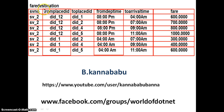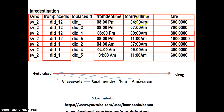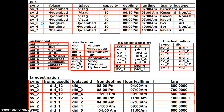The next important table is the fare destination table — this is a very important table. It has service number, from place departure ID, destination ID, to place destination ID, departure time, arrival time, and fare. In our project, the fare of the bus depends on the from place and to place. The customer can take a ticket from Hyderabad to Vijayawada, Hyderabad to Rajahmundry, Hyderabad to Thuni, Hyderabad to Annavaram, or Hyderabad to Visakhapatnam.